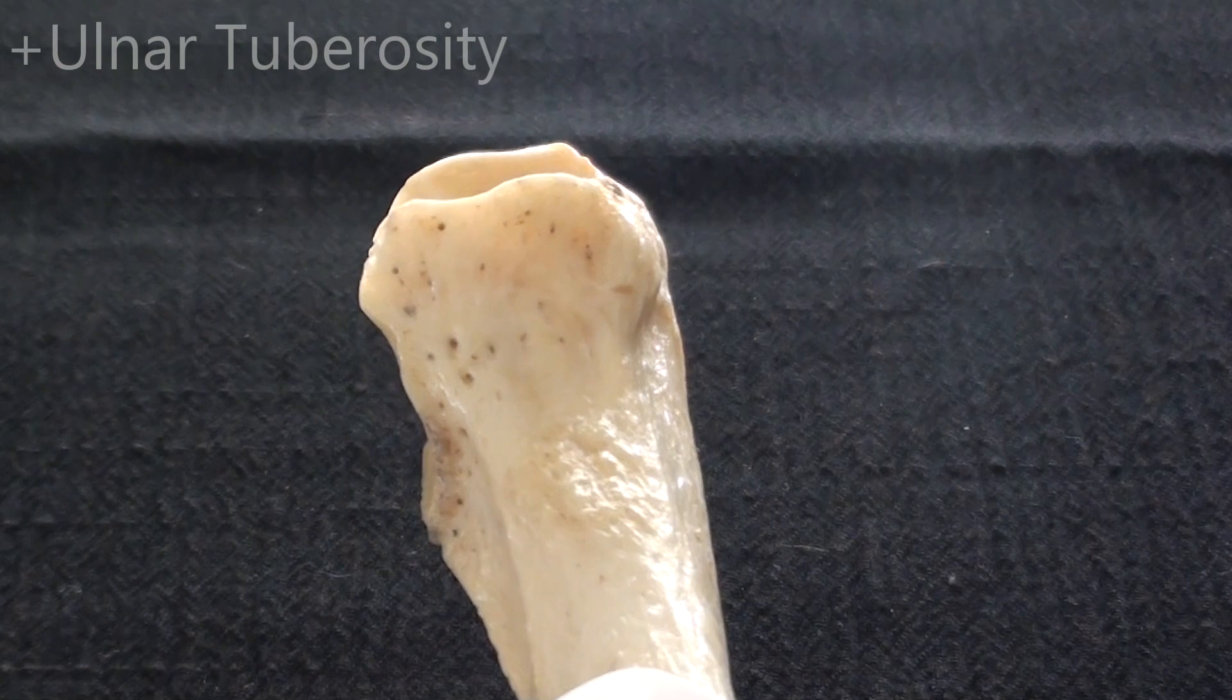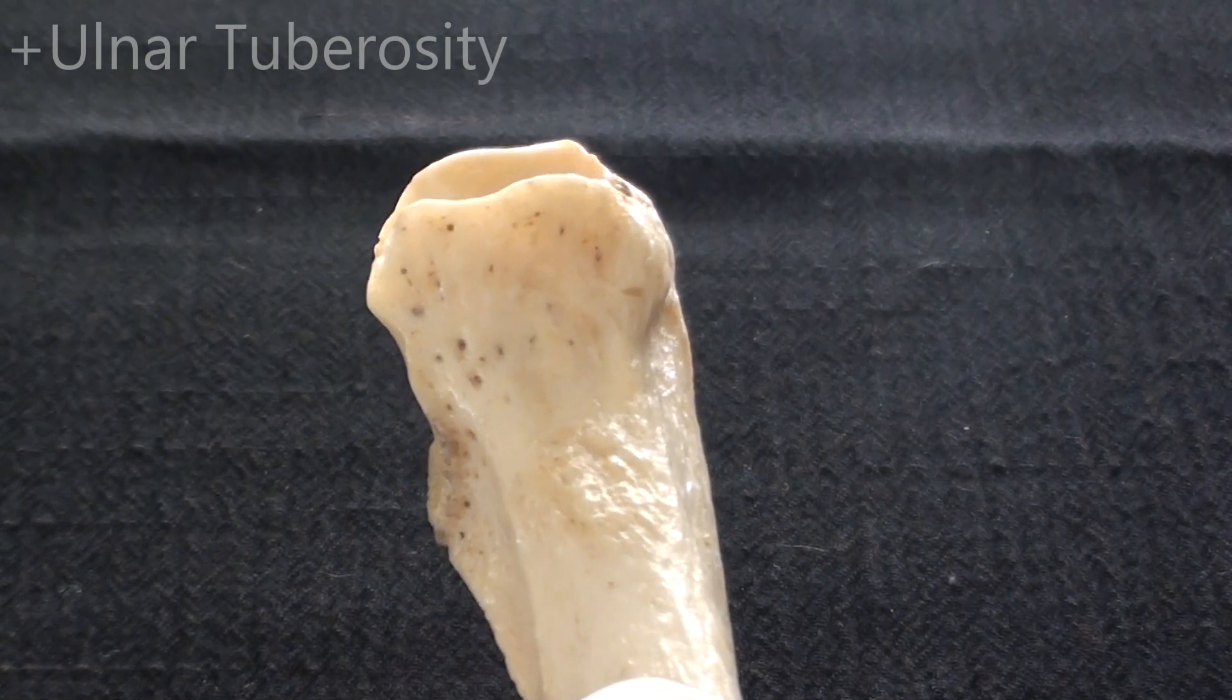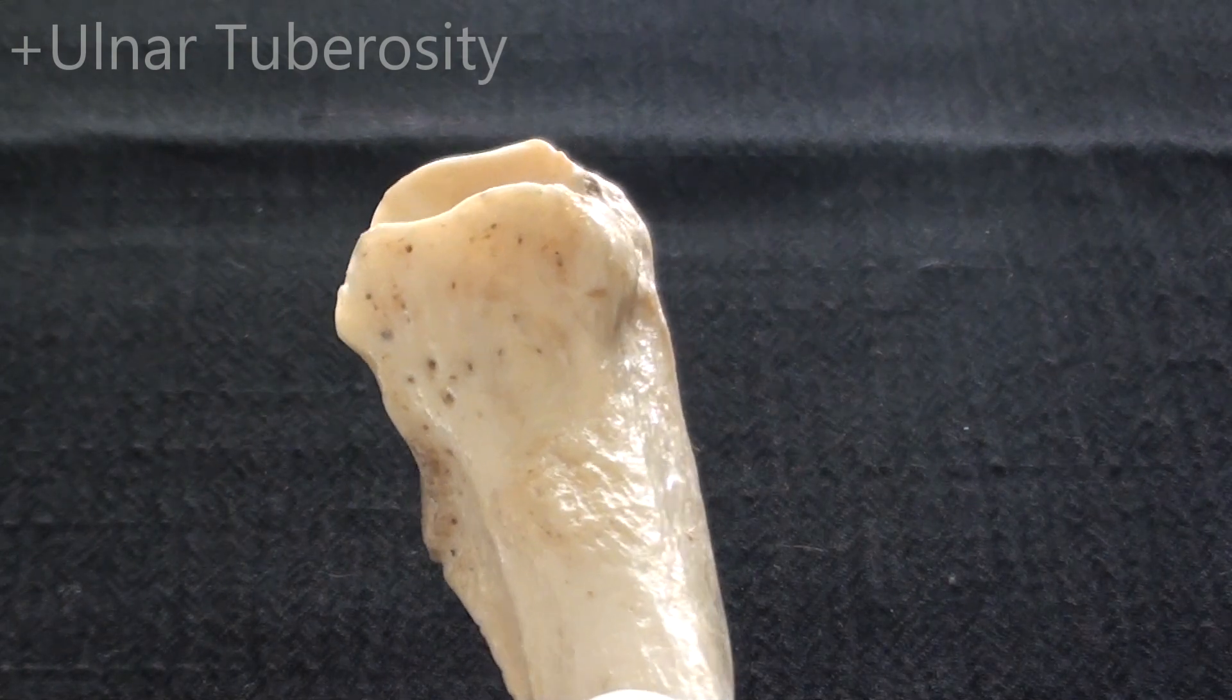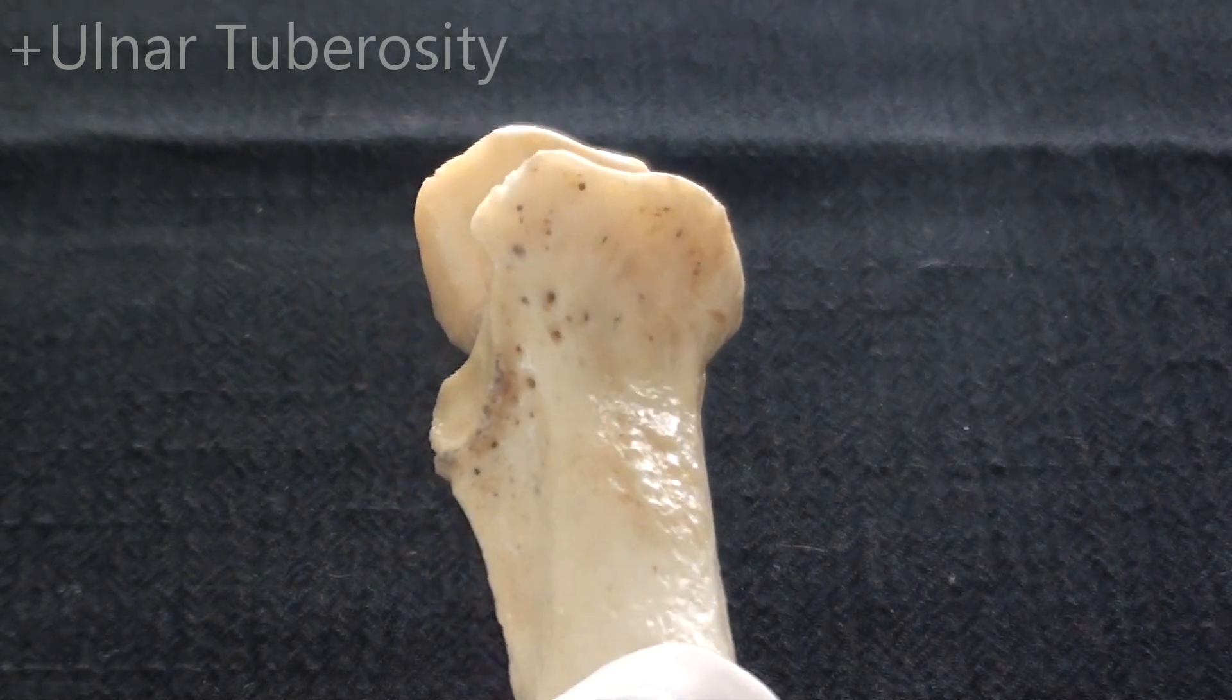Many people would add immediately biceps brachii muscle. It is a muscle that definitely supports flexion of the elbow; however, it is not considered to be the main or principal muscle of elbow flexion.